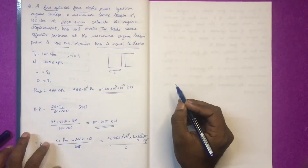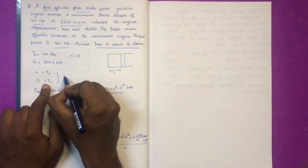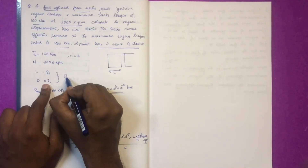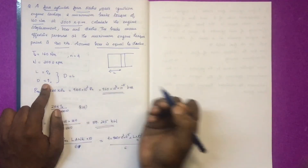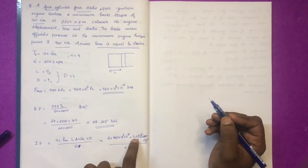Assume bore is equal to stroke, so bore = L = D meters.